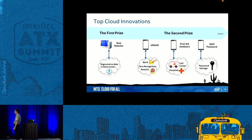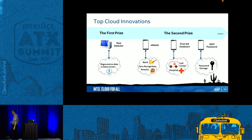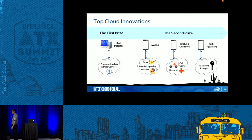The second second-prize application is a first aid outdoor app. When you see someone in an emergency outdoors, you use a smartphone to take a picture and automatically send the picture, location, and all data to a cloud-based call center and hospital. The call center and hospital then send an ambulance to the patient's location.